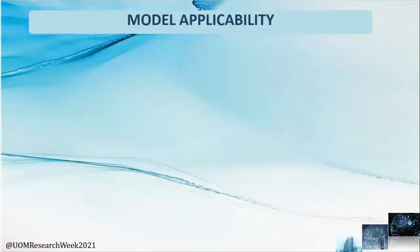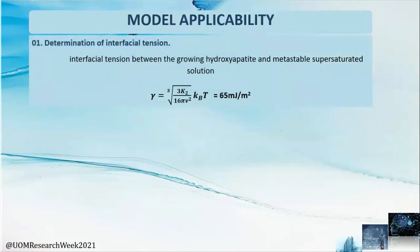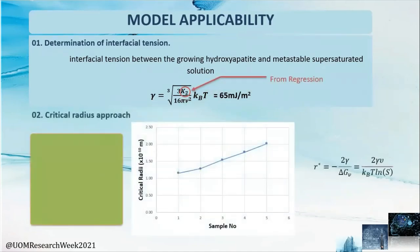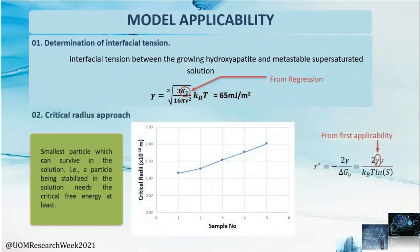For model applicability, we applied our statistically and experimentally validated model in determination of interfacial tension and obtained a value of 65 mJ per square meter, which is a realistic value according to the literature. We also calculated the critical radius. The critical radius approach can be used to explain the experimental results, as the lowest critical radius was recorded for sample number one and the highest for sample number five — the smallest critical radius contributing to smaller particle sizes.